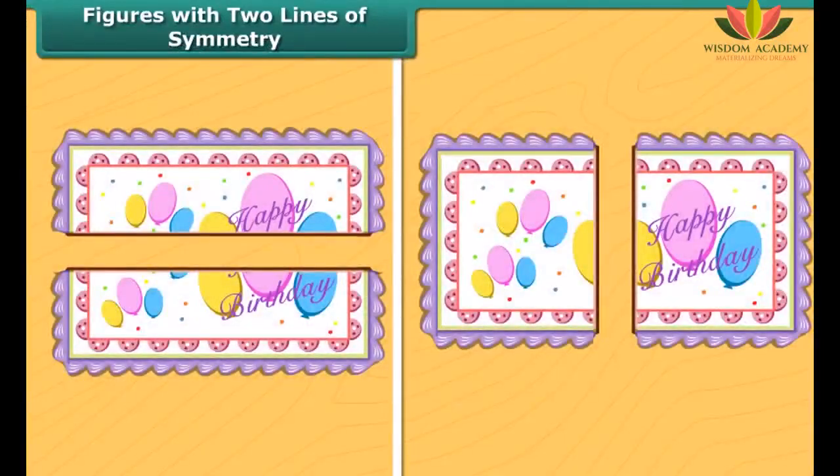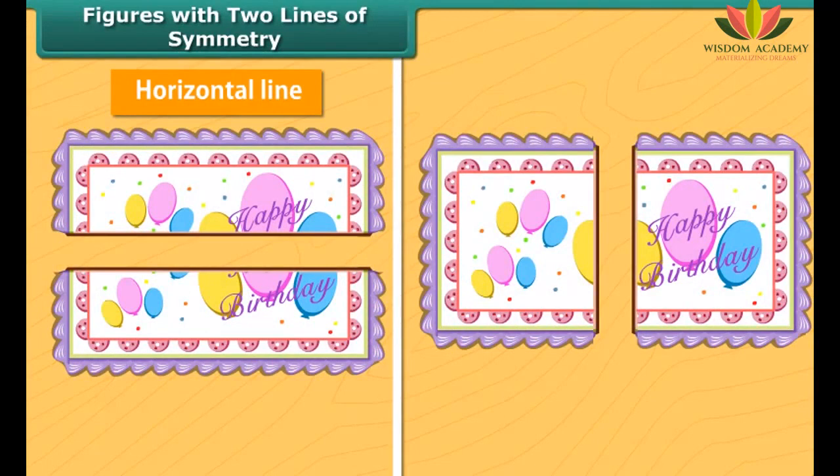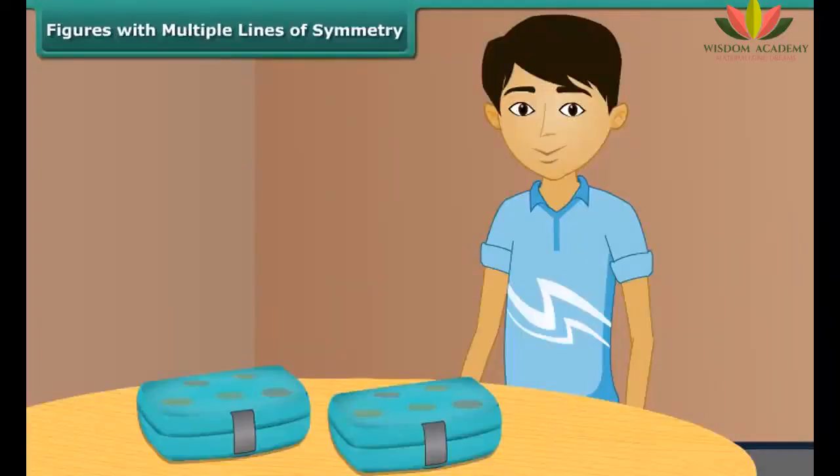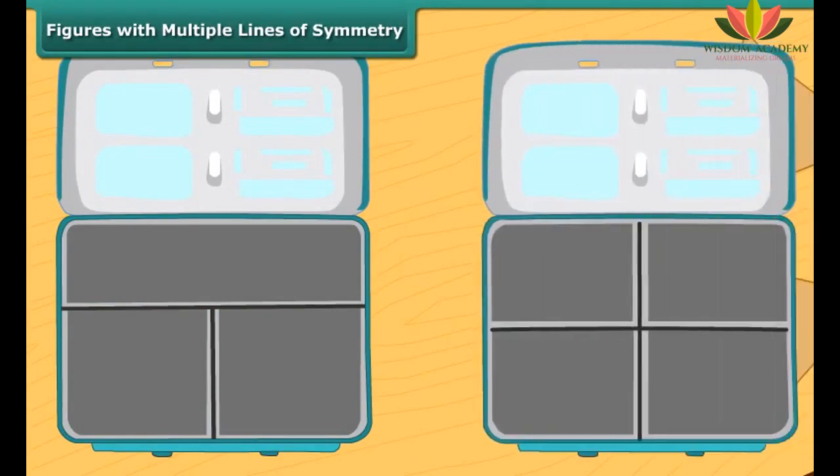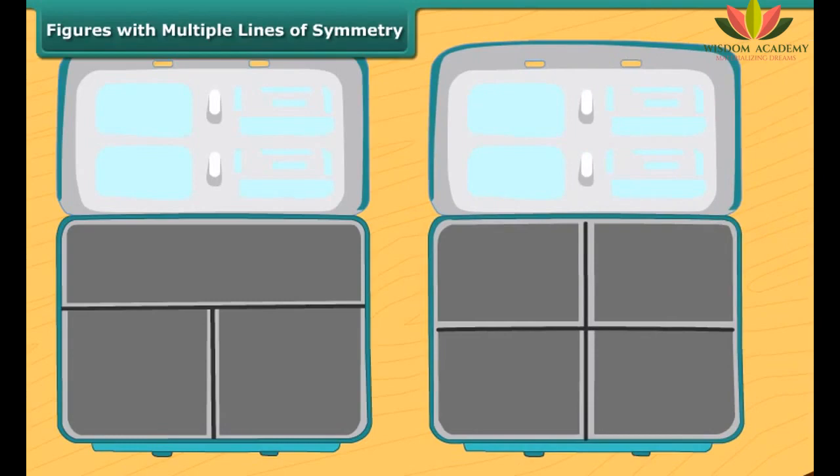The cake can be divided along the horizontal line so that its two halves match each other. It can also be divided along the vertical line. So the cake has two lines of symmetry along which it can be divided to give two identical halves. Thus we can say that a rectangle has two lines of symmetry.